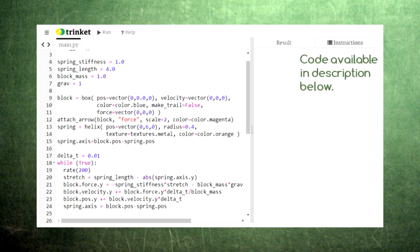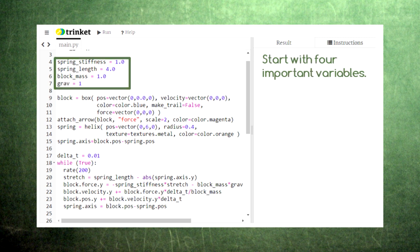We can model this feedback loop with computer code. We start with four important variables: the stiffness of the spring, the unstretched length of the spring, the mass of the block attached to the spring, and the strength of the gravitational field.